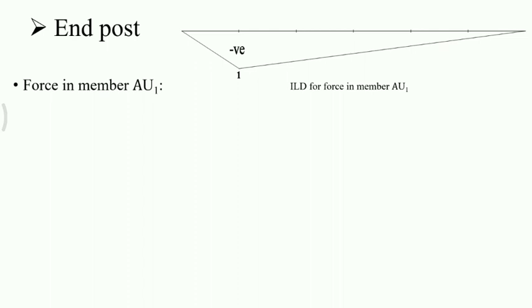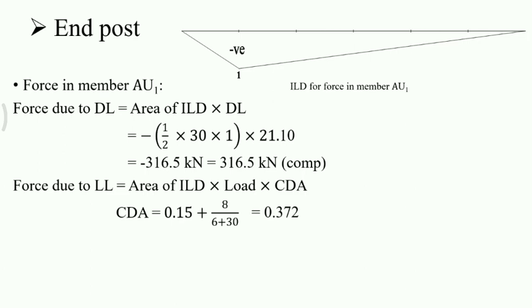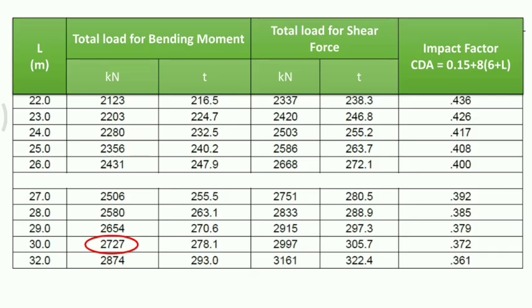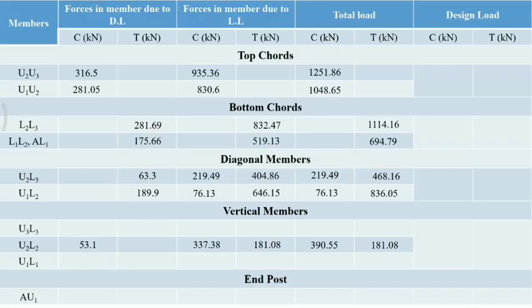The influence line diagram goes from 0 at x = 0, to −1 at x = 5 m, back to 0 at x = 30 m. Dead load force: area of ILD = −½ × 30 × 1 × 21.1 = −316.5 kN, compressive. For live load, CDA for 30 m span is 0.372 and the load for 30 m from the bridge rule is 2727 kN. Calculation: (2727/2) ÷ 30 × (−½ × 30 × 1) × 1.372 = −935.36 kN, compressive.